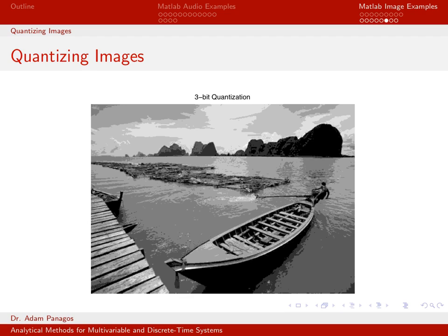3-bit quantization is only 8 allowable shades. Now we're definitely seeing some color degradation in our image. The upside is we are requiring many fewer bits to actually store the image — we require 368 times 512 times 3 total bits to store this image now, whereas before we had a multiplier of 8 because we had 8 bits per pixel.